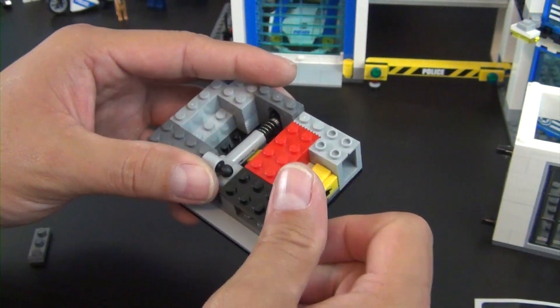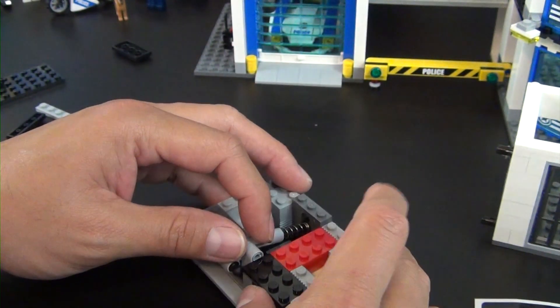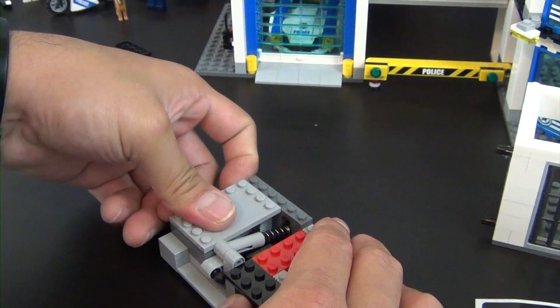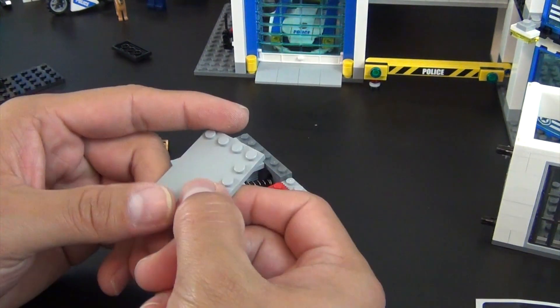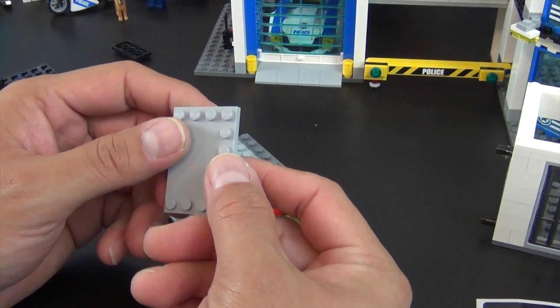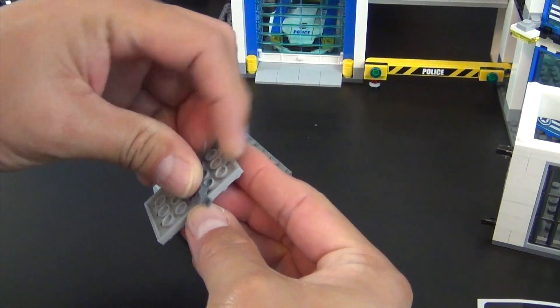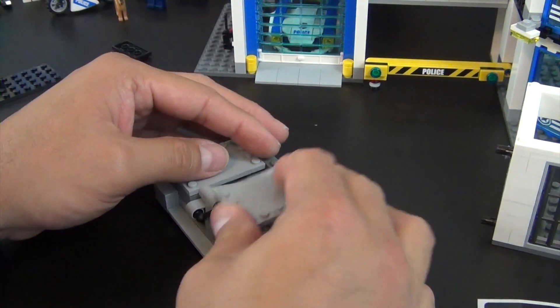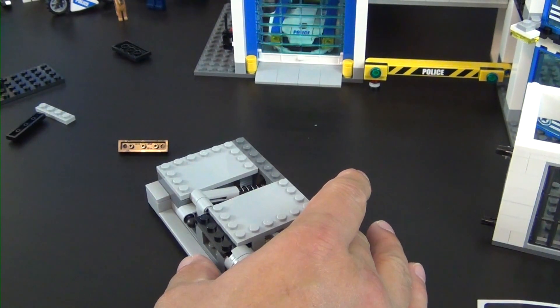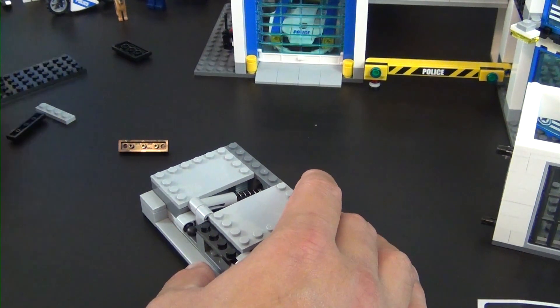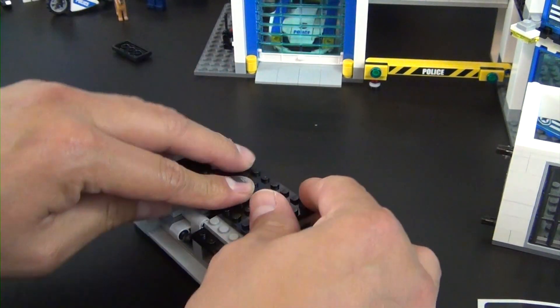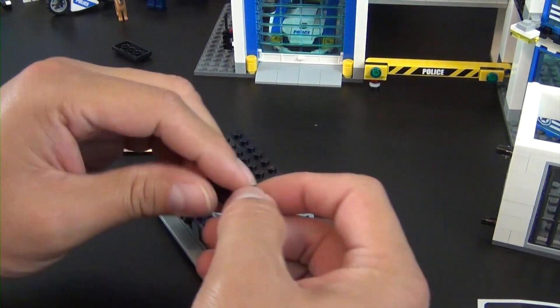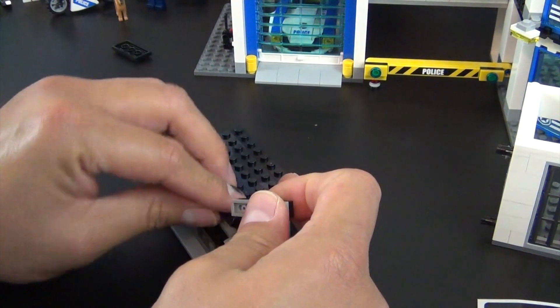Now we have this technic shock absorber piece. Put a couple non-friction pins on there and some technic bricks. Attach those to a plate and a one by three arched brick. That'll go there, and we bring this whole thing over, attach that like that. Interesting.